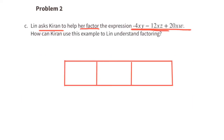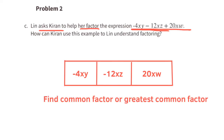Karen starts by writing the three different terms inside each of the three boxes. Next, they find the greatest common factor of all three terms and put that on the outside of the boxes. They could try using negative 4x as a common factor.